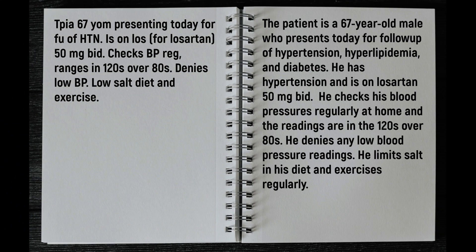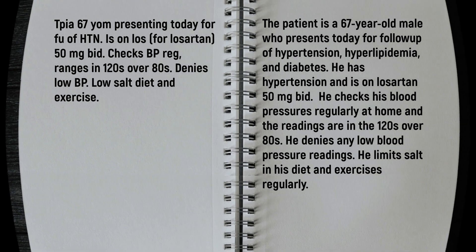The patient is a 67-year-old male who presents today for follow-up of hypertension, hyperlipidemia, and diabetes. He has hypertension and is on Losartan 50 mg. He checks his blood pressure regularly at home and the readings are in the 120s over 80s. He denies any low blood pressure readings. He limits salt in his diet and exercises regularly.